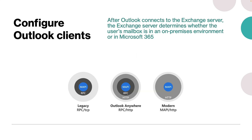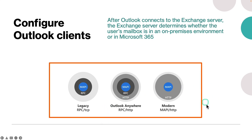What are the things you need to know before configuring the Outlook clients? When Outlook users connect to Microsoft 365, they must provide their Microsoft 365 email address and password when they start Outlook for the first time. The auto-discover functionality in Microsoft 365 automatically configures Outlook for use with Microsoft 365. This graphic shows the encapsulation of MAPI commands in RPC calls.